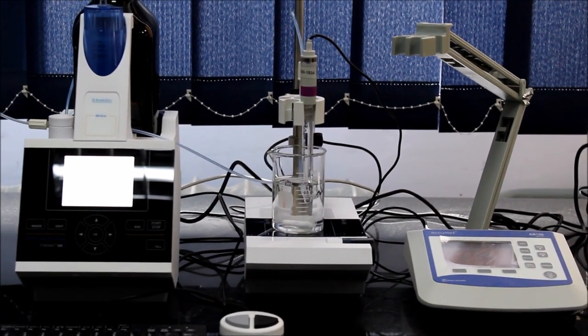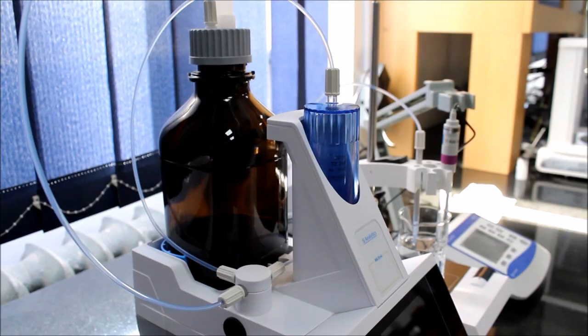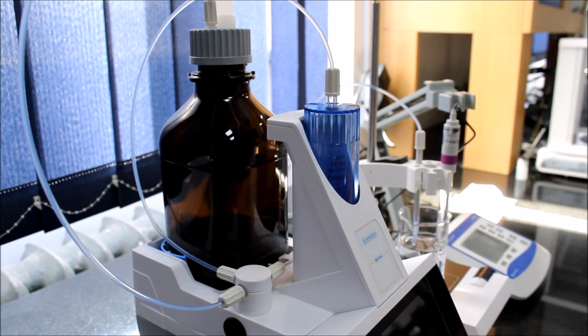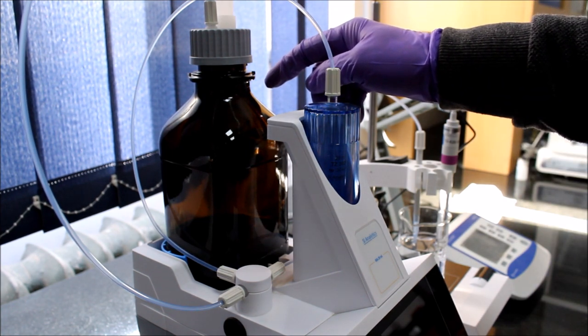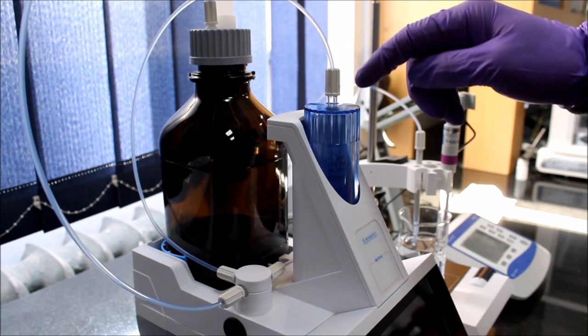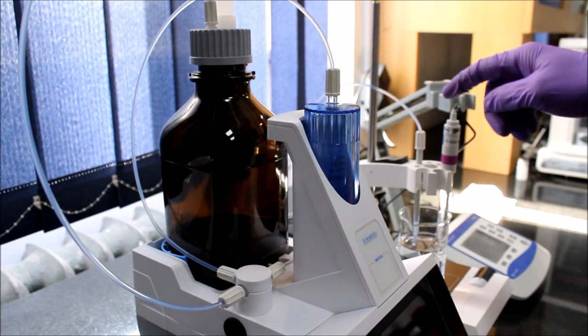So let's start with the autotitrator itself. Generally all autotitrator machines contain the bottle in which the titrant solution is stored. The water is pumped from the bottle to a little tube by the piston from which it is then delivered to the sample solution.